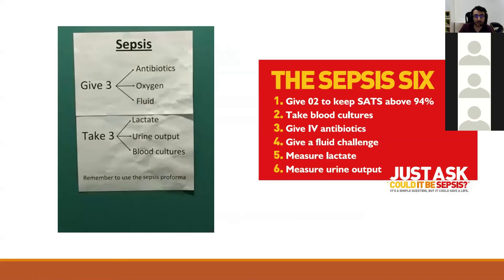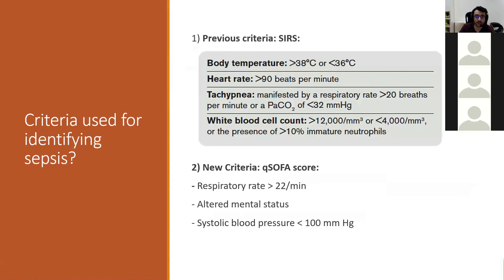Question: would you use NEWS instead of SIRS? Potentially — but the NEWS score can't be used as a determining factor specifically for sepsis, because it could reflect other causes of acute illness such as haemorrhagic shock. It's not a specific criterion for sepsis.